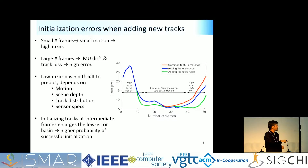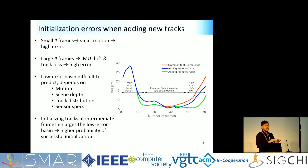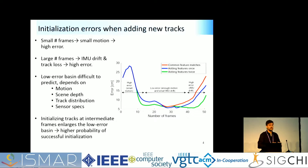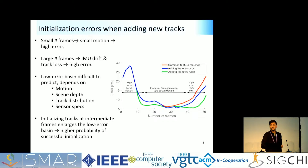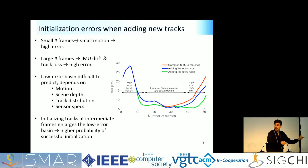Ideally, you want to initialize in this low-error region, but the problem is you never know where it is — it depends on camera motion speed, scene depth, track distribution, and sensor specs. By using more tracks and initializing them from any frame in the sequence, we extend this low-error region. The red curve shows error using only first-frame tracks. Adding tracks once gives the blue curve with a wider low-error region; adding tracks twice extends it even further.